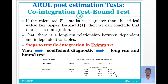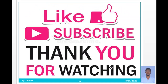Finally, the post estimation test is the cointegration test, which is the bounds test. If the calculated F-statistic is greater than the critical value for the upper bound, we can conclude that there is cointegration — that is, a long-run relationship between the dependent and independent variables. The steps in EViews: View, then Coefficient Diagnostics, then Long Run and Bound Test. If the F-statistic is greater than the upper bound critical value, there is evidence of a long-run relationship.